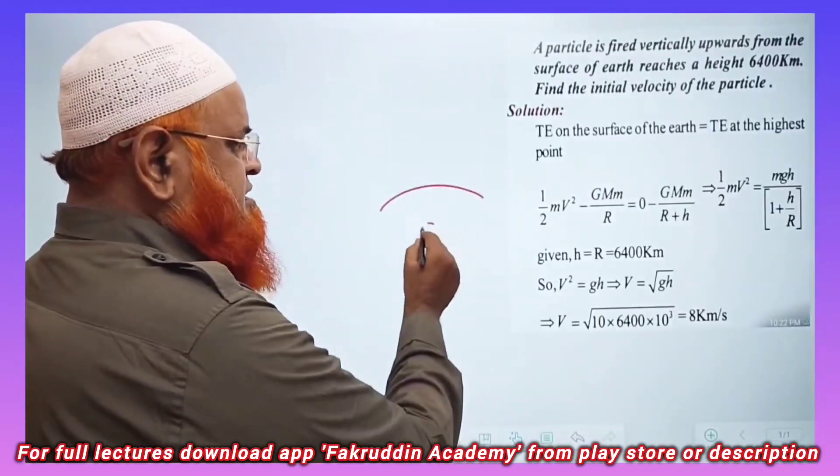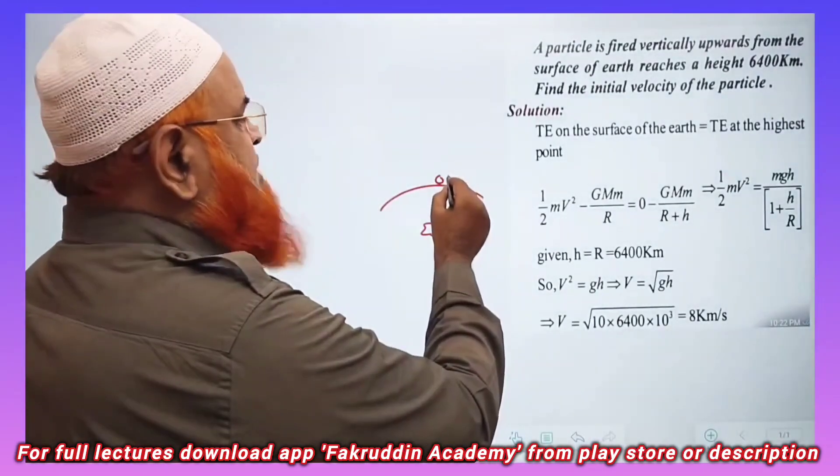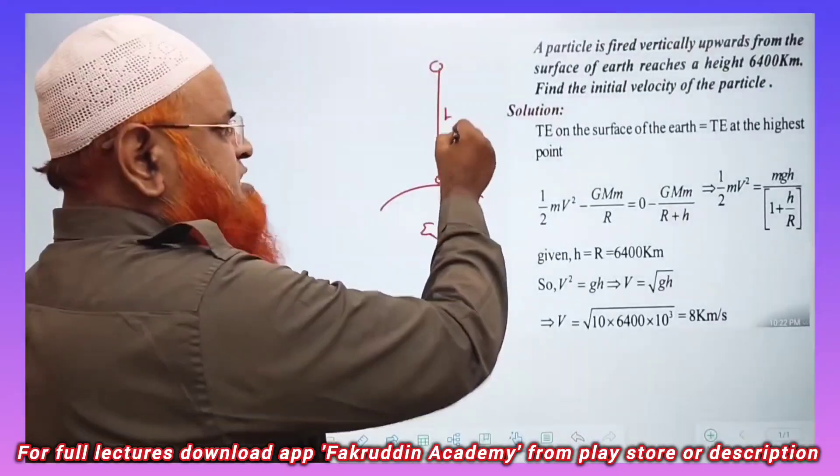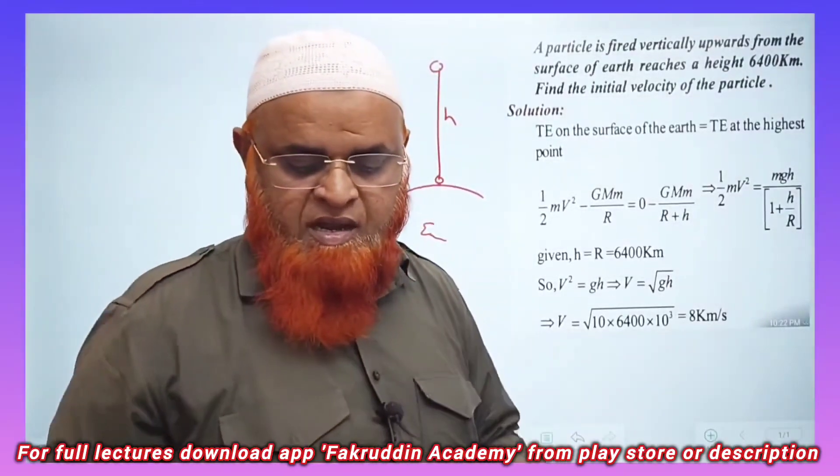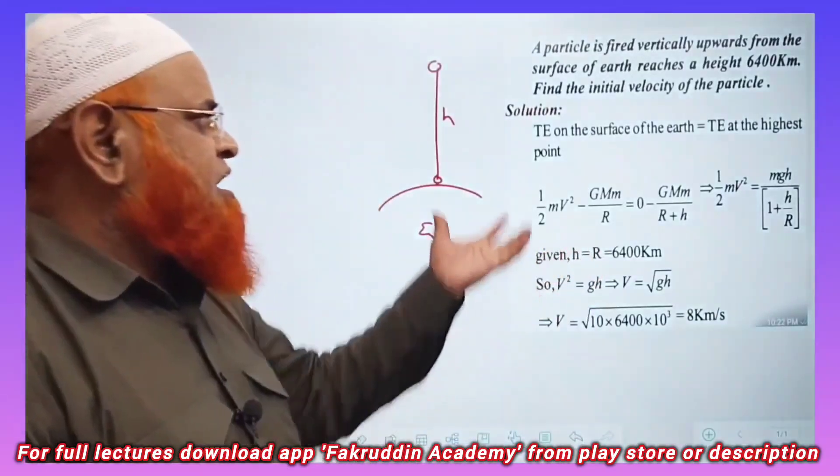A particle, for example this is the earth here, a particle is fired vertically upwards. For example, it has been thrown upwards to certain height like this. What is going to happen? Let us see. The particle is projected to a certain height above the earth.